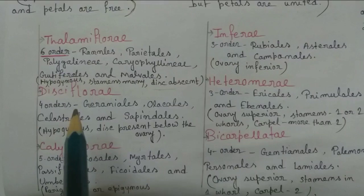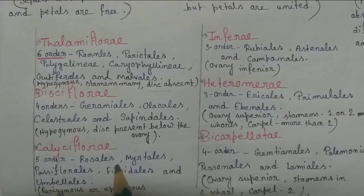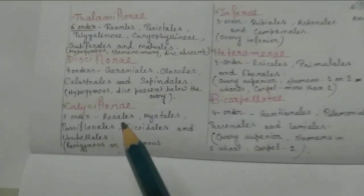Disciflorae is also further divided into four orders. Those are Geraniales, Olacales, Celastrales, and Sapindales.